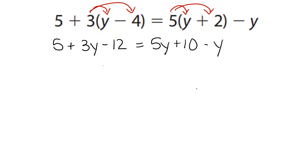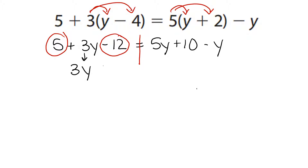Now we can start combining like terms. On the left-hand side, I have 5 plus 3y minus 12. 5 and the minus 12 are like terms because they do not have a variable. I bring down the 3y and I can solve. 5 minus 12 is going to give me negative 7. Put down my equal sign and bring down everything else that we did not use.